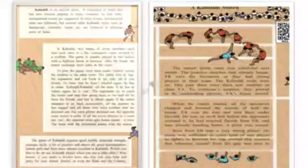To play the game, each team sends raiders across the middle line to the other team. The raider tries to tag the opponents and run back to his side, all in one breath. To show that he hasn't inhaled again, he has to chant Kabaddi, Kabaddi, Kabaddi all the time.